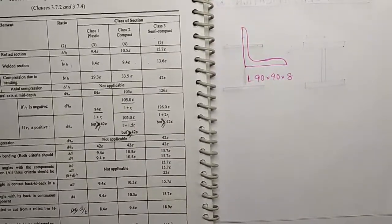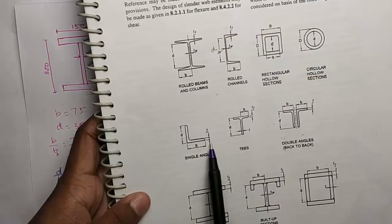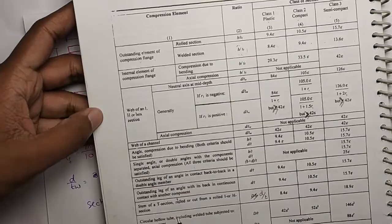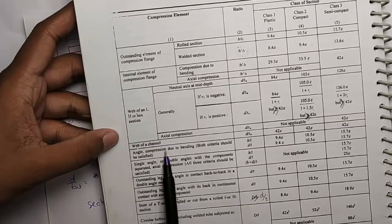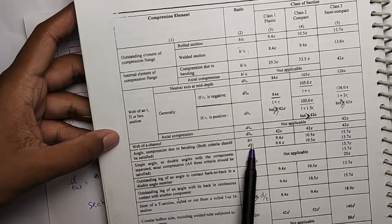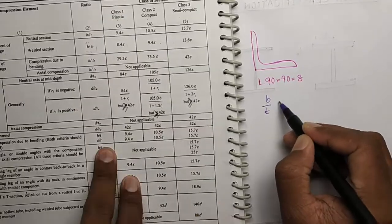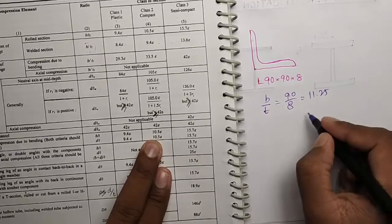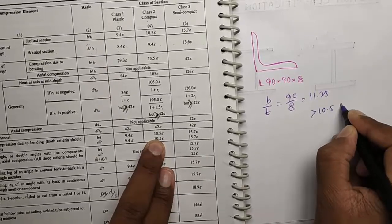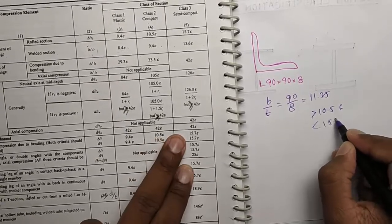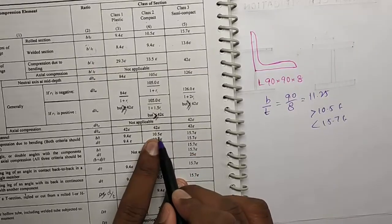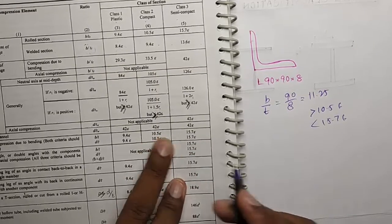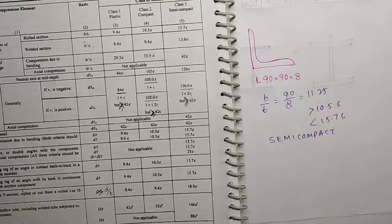Now coming to this angle. Single angle, B is 90 and this is T, which is 8. And now in table 2, angle compression due to bending. So B by T. In our case, B by T will be 90 by 8, which is 11.25. So you see it is greater than 10.5 epsilon and less than 15.7 epsilon. So it lies between these two, so it will be semi-compact. Hope you understand this.